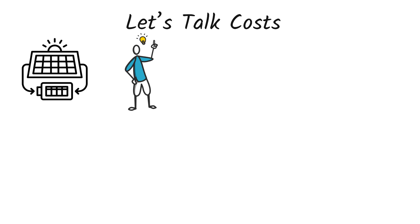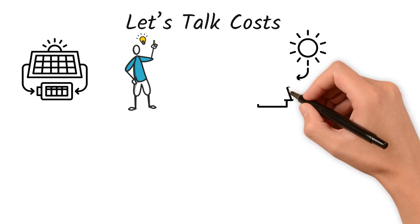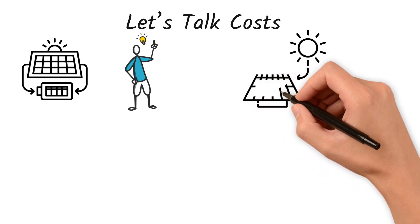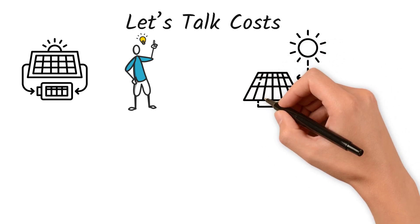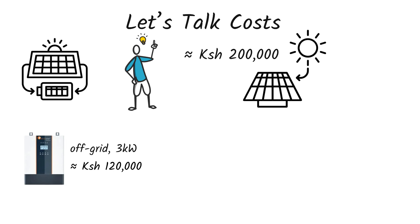For a small rural home running basic lights, TV, and a fridge. For example, a 3-kilowatt solar panels can cost around 200,000 shillings. An off-grid 3-kilowatt inverter can cost around 120,000 shillings. A 7.2-kilowatt-hour battery bank, which is lithium-ion-based, can cost 300,000 shillings.